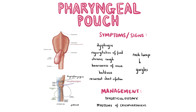A pharyngeal pouch can be diagnosed by barium swallow. According to NICE guidelines, the traditional treatment for a pharyngeal pouch is diverticulectomy, which is removal of the pouch, or myotomy of the cricopharyngeus muscle. Usually this is done by open surgery, but more recently endoscopic techniques are being used instead to speed up recovery times and reduce the risk of complications.